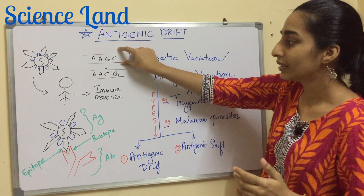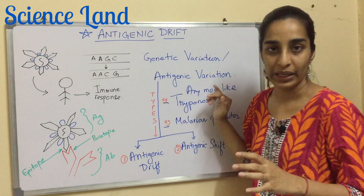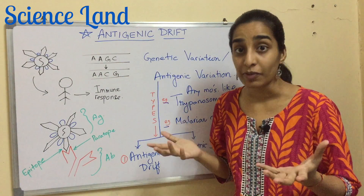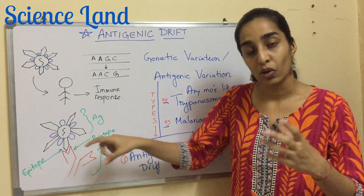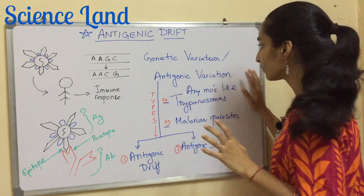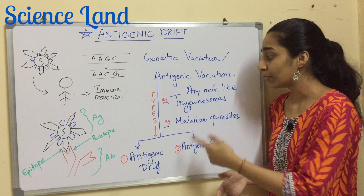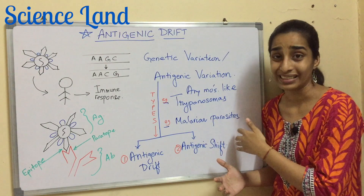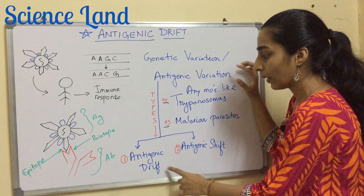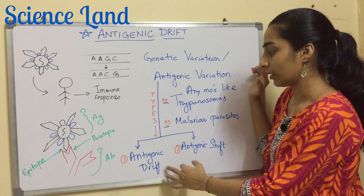Let's assume the sequence for this epitope is AAGC. Any change or variation in this antigenic sequence is known as antigenic variation — it can be a point mutation or any other type of mutation. Antigenic variation can occur in any microorganism: trypanosomes, malarial parasites, viruses. There are two types: antigenic drift and antigenic shift.